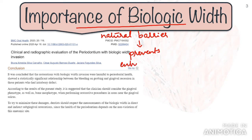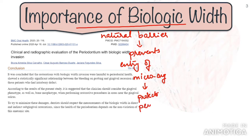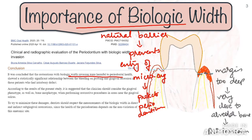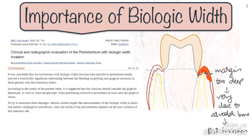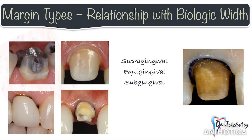Biologic width protects the two most vulnerable structures of the tooth: the periodontal ligament and the alveolar bone. As this article rightly suggests, biologic width invasion will harm the periodontal health. It is mainly related to the position of your restorative margin. If you have a crown impinging on this zone, you are invading the biologic width and you end up damaging the periodontal tissues.